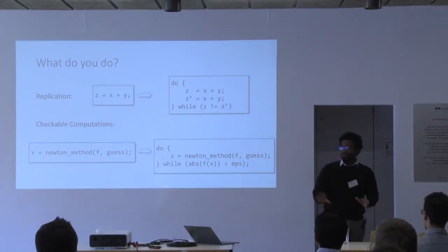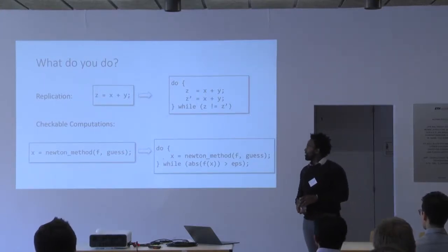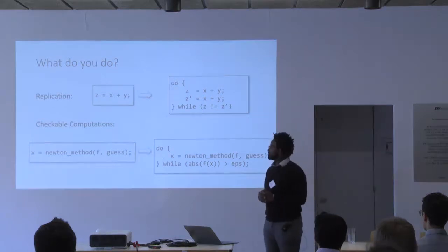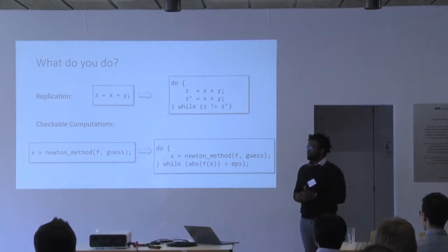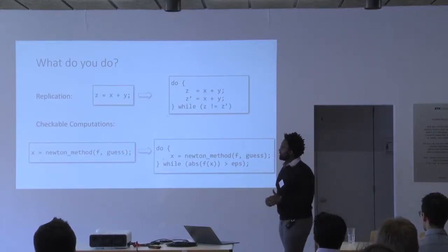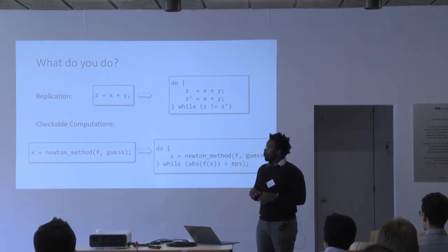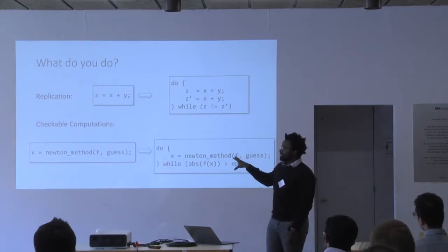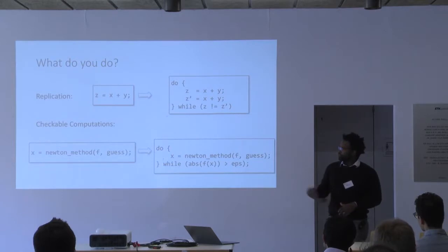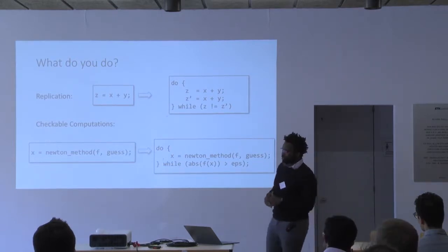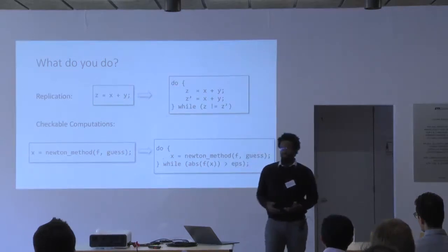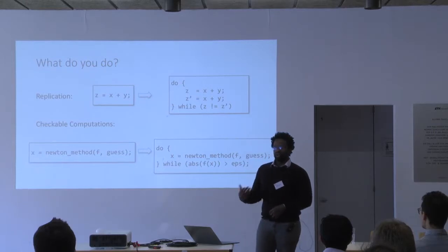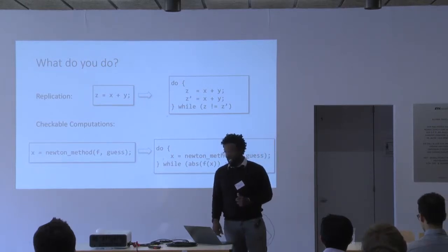What's the problem with replication? Well, by duplicating our computation we're going to have an additional performance hit, and also an energy consumption hit. One approach to avoiding this duplication is by doing something we call checkable computations, where for certain classes of computations you can write lightweight checkers to verify if you got a correct result. For example, with Newton's method — where we're trying to find zeros of some function f starting with some initial guess — I can get my result x and see if it is in fact zero. If not, I loop back around under the hypothesis that the next time I'll actually get the correct answer.